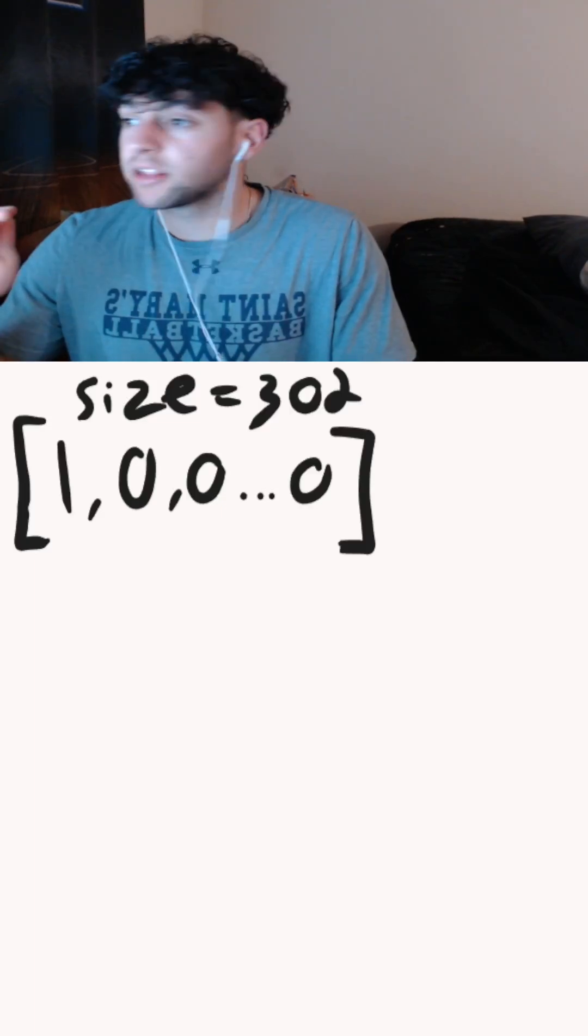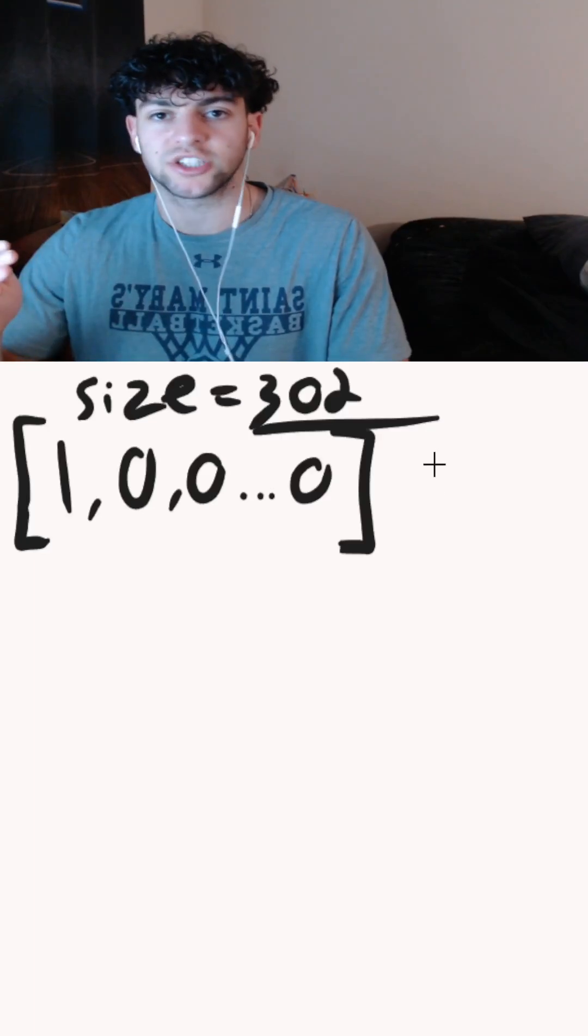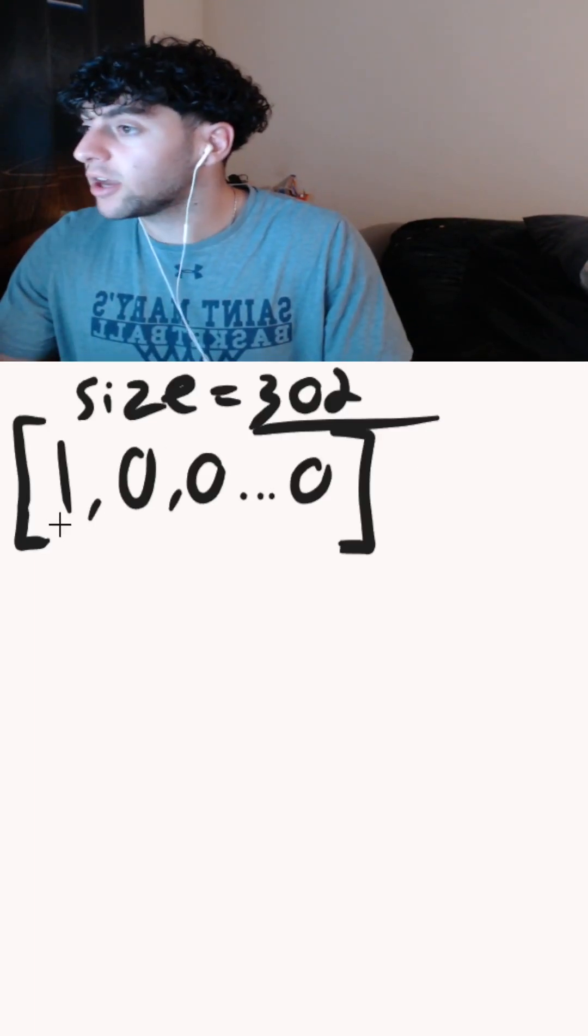To solve this programmatically, we'll define an array of size 302 since 2^1000 has 302 digits, and initialize the first element to 1.